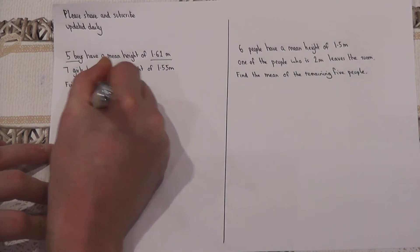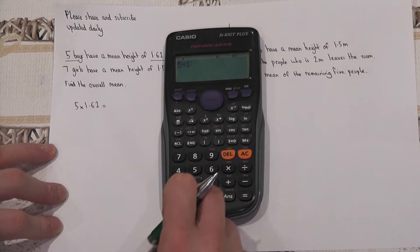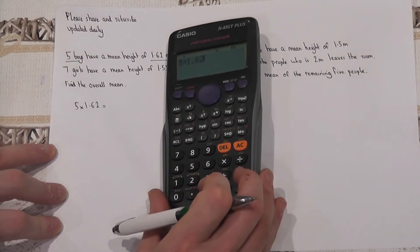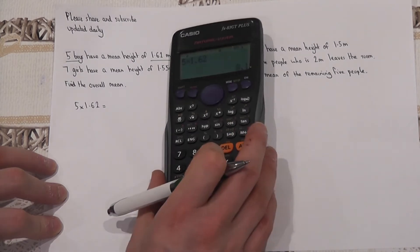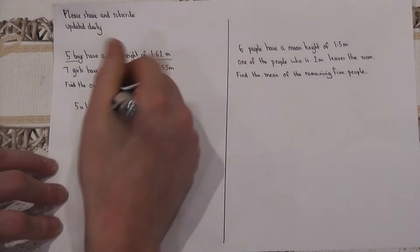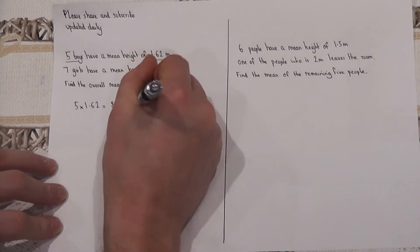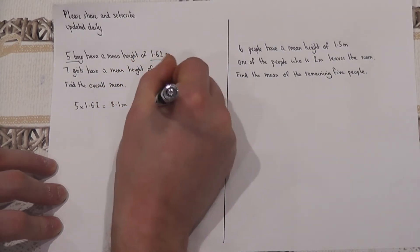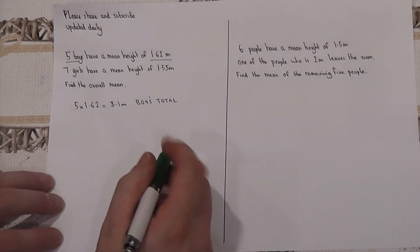So if I do five lots of 1.62, that will tell me what the total height of all the boys is. So five times 1.62 gives me 8.1. So the boys have a total height of 8.1 meters.